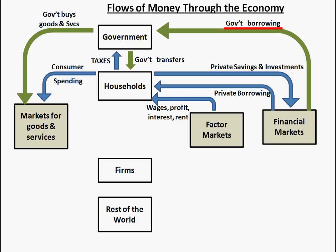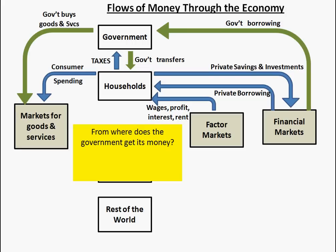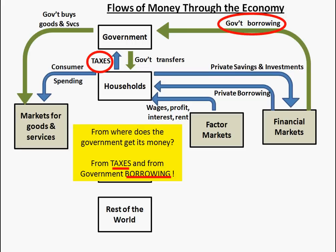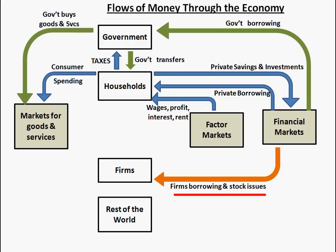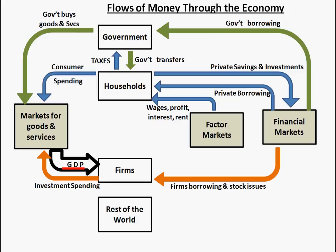Sometimes the government is in the same situation — it doesn't have enough money to make all the transfer payments it wants and buy all the goods and services, so it also has to borrow money from the financial markets. The government gets its money from taxes and from borrowing. Businesses also need capital through the financial markets or through individual investors who buy stock. Firms invest that money in whatever goods and services they sell, going into the market for goods and services, and that generates the gross domestic product number.